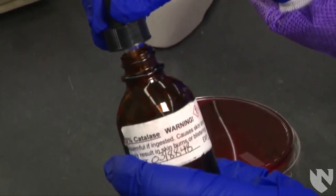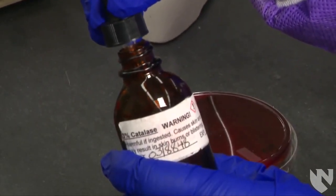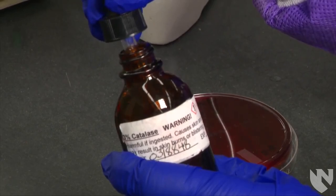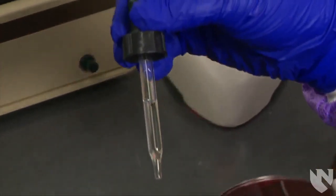Next, using the dropper from the 3% hydrogen peroxide bottle, place one free-flowing drop on top of the smeared bacterial colony.